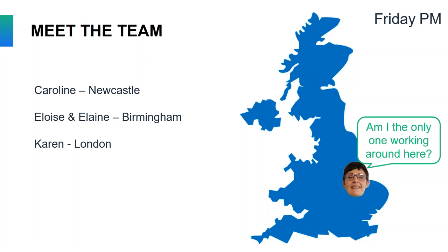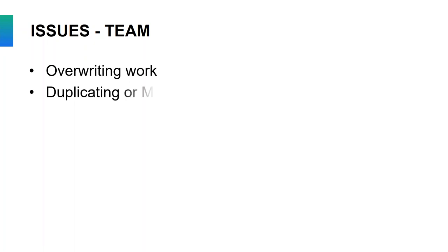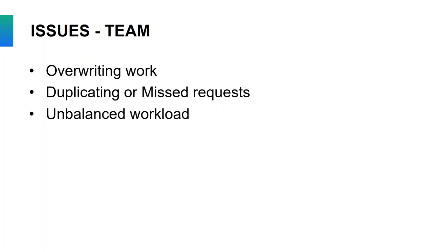Come Friday, there's no Karen at all, and Eloise and I disappear on Friday afternoon, leaving poor Elaine all on her own. As you can imagine, we have faced quite a few issues with this setup. Issues we've faced as a team include overwriting work — we used to work in Word documents with no source control, which meant we sometimes overwrote each other's work.